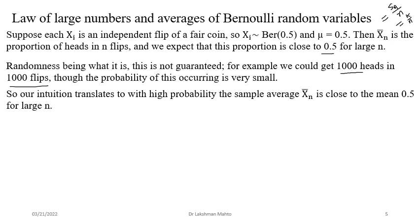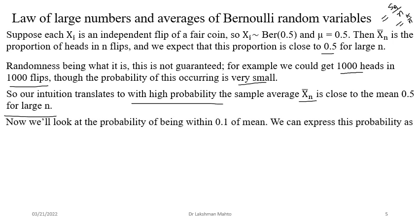The randomness is not removed here — for example, we could get 100 heads in 100 flips. Even in 1000 trials, you might always get heads, but that is a very rare event with probability one in 2^1000, which is extremely small. So with very high probability, the sample mean is very close to 0.5 — not with probability exactly one, but with very high probability. That is the ultimate intuition of the Law of Large Numbers.